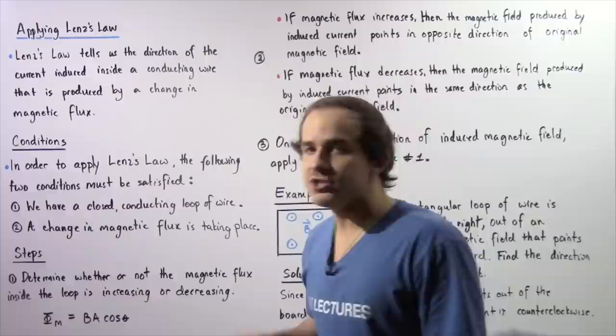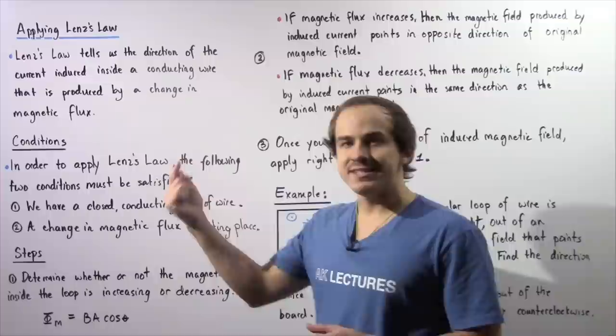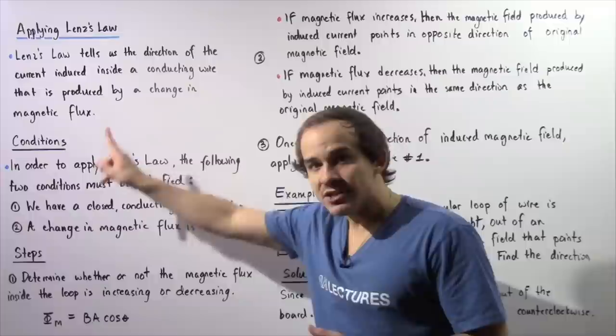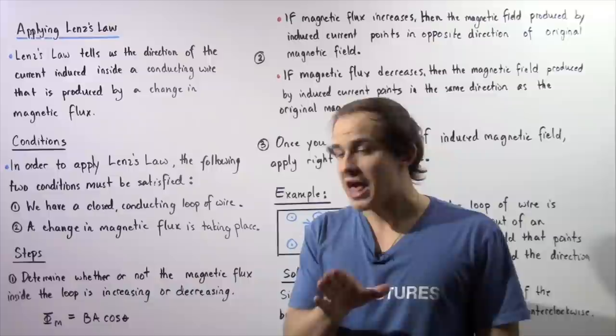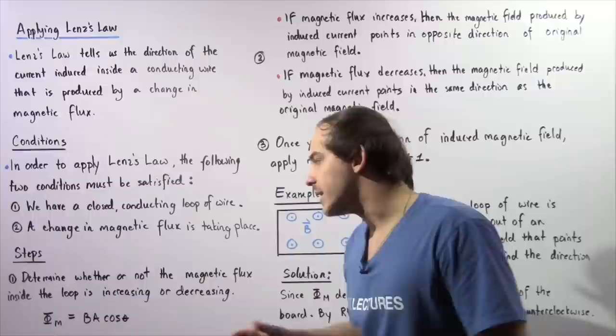For example, if our area and angle remain constant but the magnetic field B is increasing, then by this equation the entire product is also increasing, meaning the magnetic flux is increasing. Likewise, if B is decreasing, the flux is also decreasing.